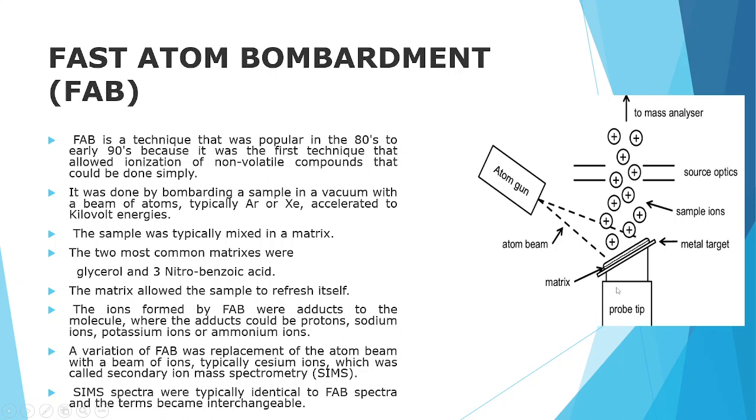What is written here is depicted here. This is the matrix, the source which is ionization from the atom. Then the atom beam which is also positively charged reaches the source. This is how fast atom bombardment was done and ionization was produced. So this is the summary of fast atom bombardment method.